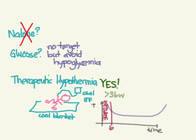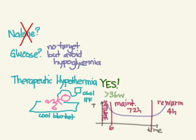Therapeutic hypothermia has a role especially in babies greater than 36 weeks. Initiate it within six hours, maintain for 72 hours, then re-warm over four hours. This will likely be managed by NICU or PICU protocols. In the emergency room, just initiate it — possibly with cooled IV fluids or cool blankets — to prevent hypoxic-ischemic encephalopathy.